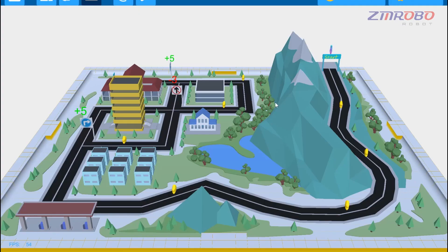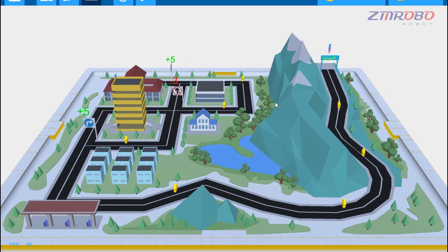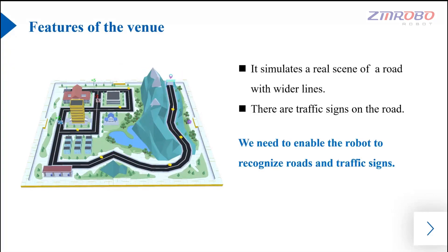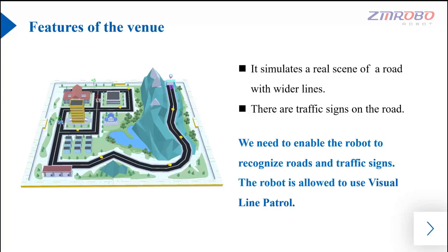You can first observe the venue. You can find this venue can simulate a real road scene, and the line is relatively wide. There are also some traffic signs on the road, which requires the robot to be able to recognize the road and traffic signs. We can make the robot use visual line patrol to follow the line from the starting point to the end point.